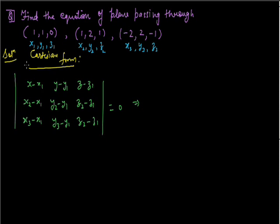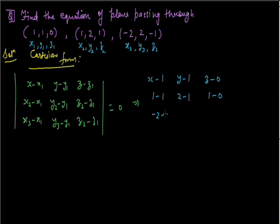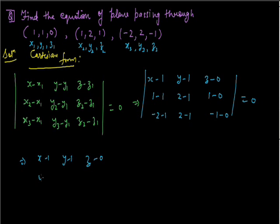Let's put the values. We get (x minus 1), (y minus 1), (z minus 0) in the first row. The second row becomes (1 minus 1), (2 minus 1), (1 minus 0), and the third row becomes (-2 minus 1), (2 minus 1), (-1 minus 0). On simplification, this becomes: first row (x minus 1), (y minus 1), (z minus 0); second row (0, 1, 1); third row (-3, 1, -1). Determinant equals zero.